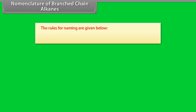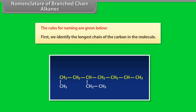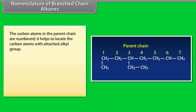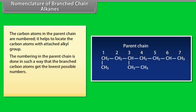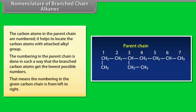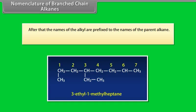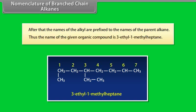Rules for naming branched chain alkanes: First, identify the longest carbon chain in the molecule. The carbon atoms in the parent chain are numbered to help locate the carbon atoms with attached alkyl groups. The numbering in the parent chain is done such that the branched carbon atoms get the lowest possible numbers — that means numbering from left to right. The names of the alkyl groups are then prefixed to the name of the parent alkane. For example, the name of the given organic compound is 3-ethyl-1-methyl-heptane.